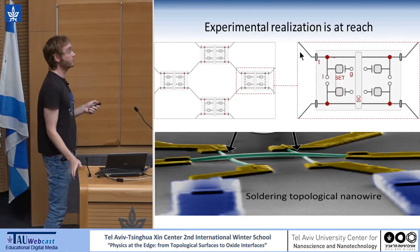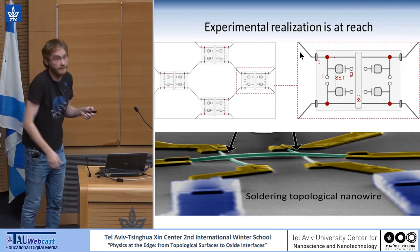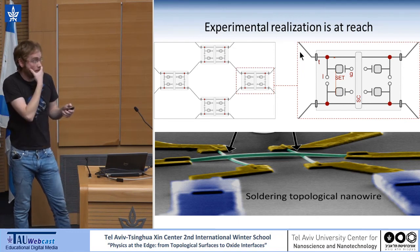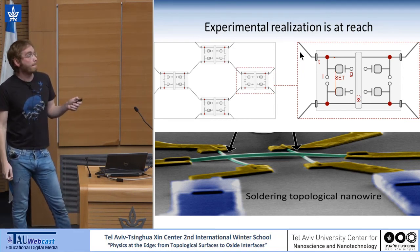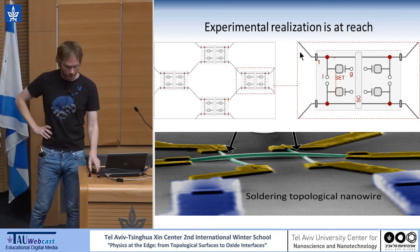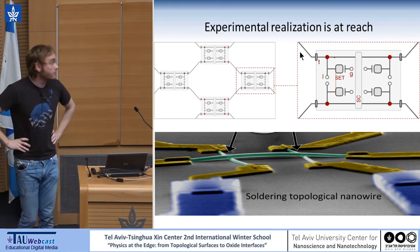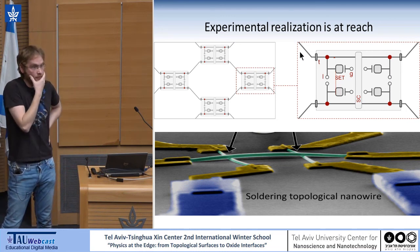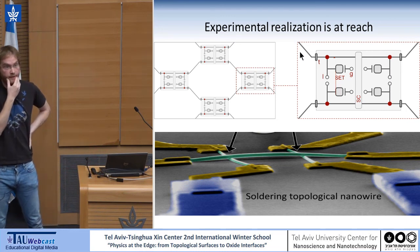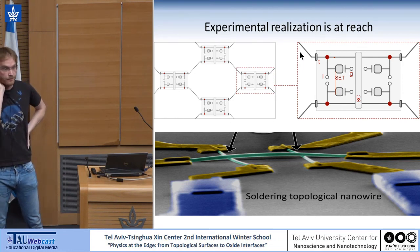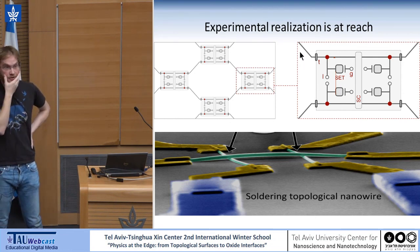To conclude: this is a very simple scheme that is very close to experimental reach. It is going to be built in Charlie Marcus's lab soon, hopefully. As an outlook, we are working on how to make more complicated code operations like braiding and logical gates. Thank you for your attention.